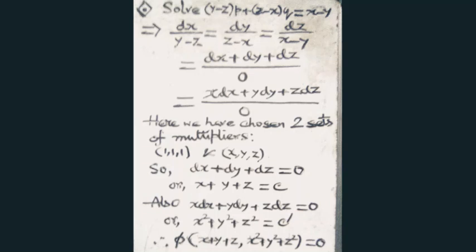We have obtained two solutions. The general solution is φ(x + y + z, x² + y² + z²) = 0. In the general solution we do not write arbitrary constants — φ itself represents the general solution of this Lagrange equation.